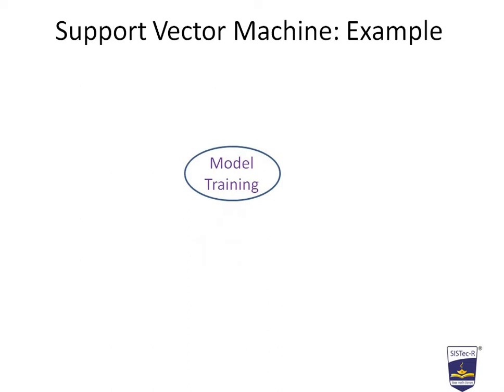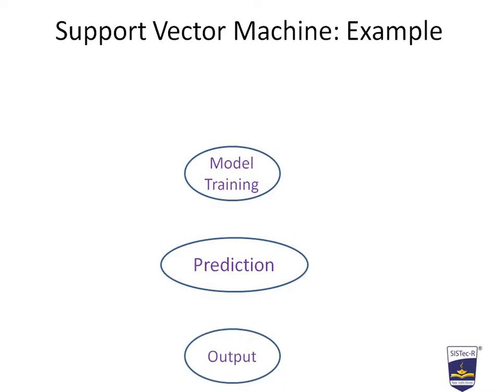The overall Support Vector Machine steps are: the first step is model training, the second is prediction, and the third is output. Firstly our model will get trained, then it will be able to predict new data, and further generate the output.